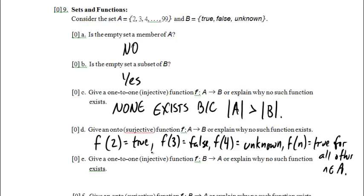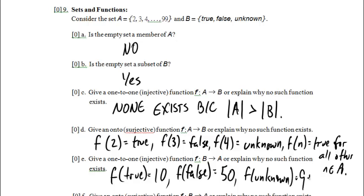Give a one-to-one injective function that maps from B back to A, or explain why no such function exists. So now we're going to want to go from B to A, and we're going to make sure that no two elements in B map to the same element in A. And we've got plenty of room for that, so we can just say F of true is equal to 10. Doesn't really matter, choose anything you want, as long as you don't choose the same thing twice. F of false is equal to 50, and F of unknown, let's go all the way up to 99. And that's an example of an injective function.